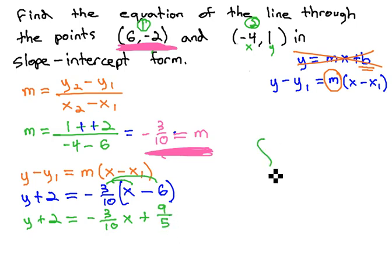Recall when multiplying fractions, negative 3 tenths times 6. If we put the 6 over 1, we can reduce 6 and 10 by 2, giving us 5 and 3, and multiplying straight across gives us 9 fifths. Oops, there were two negatives. Negative times a negative is a positive.